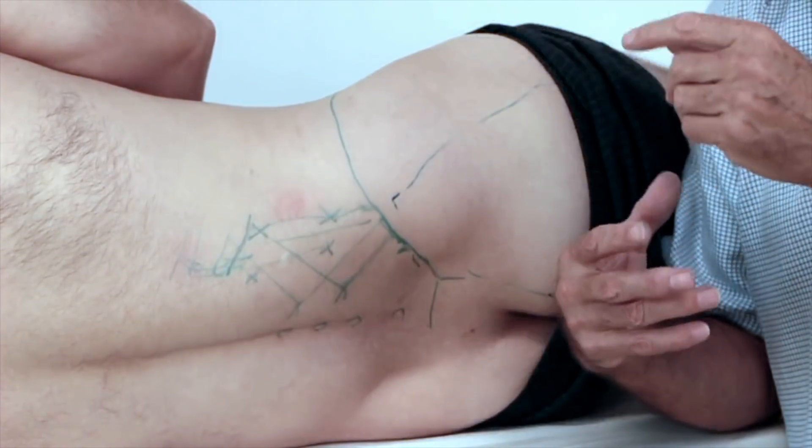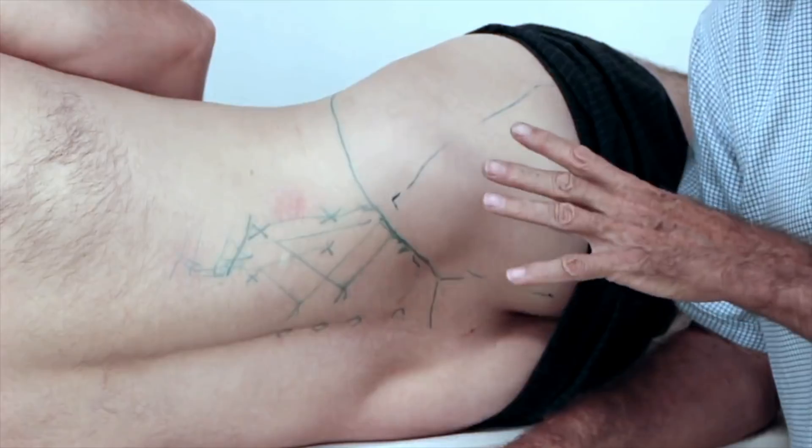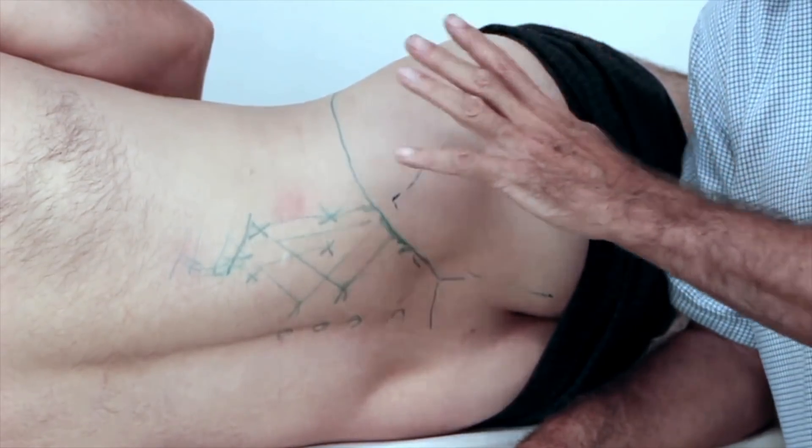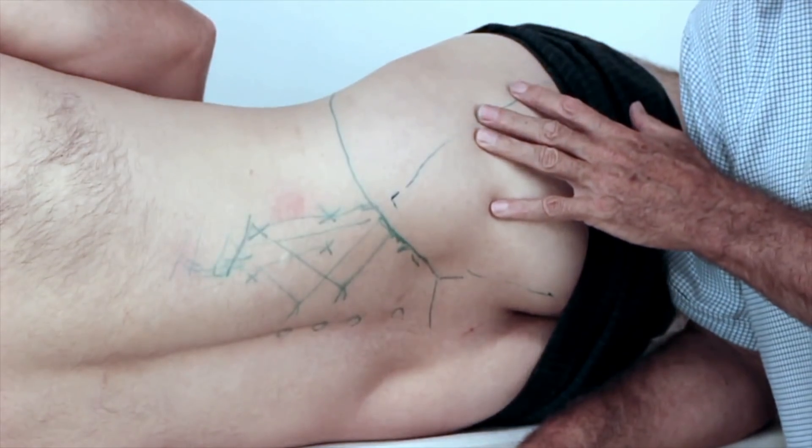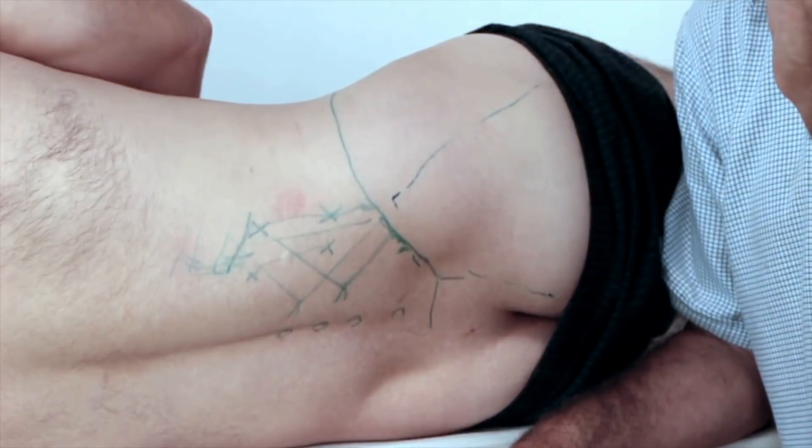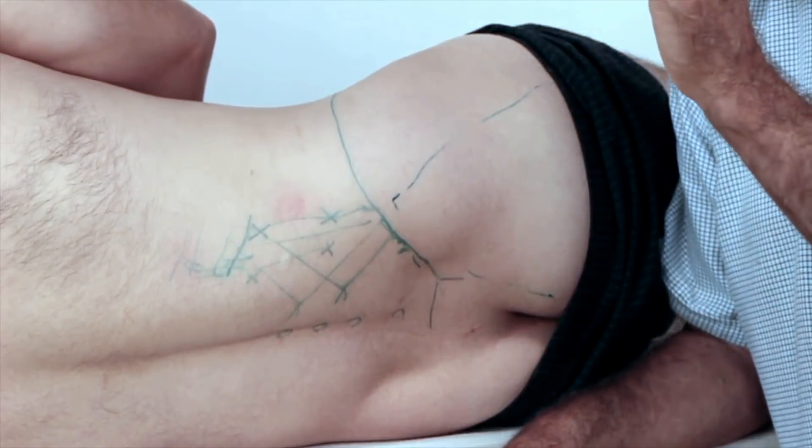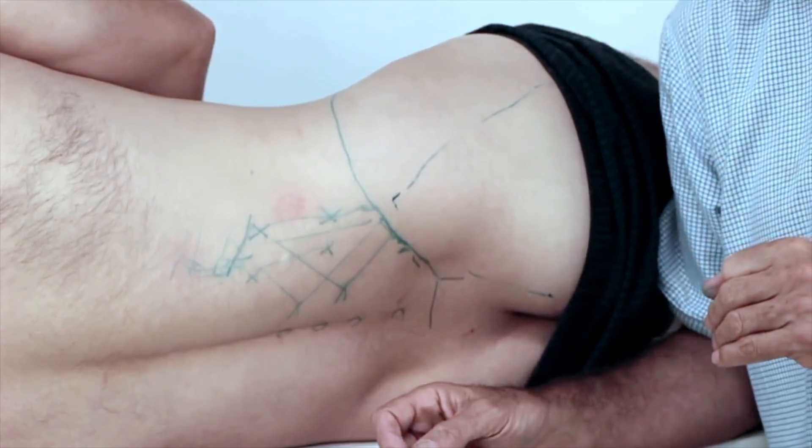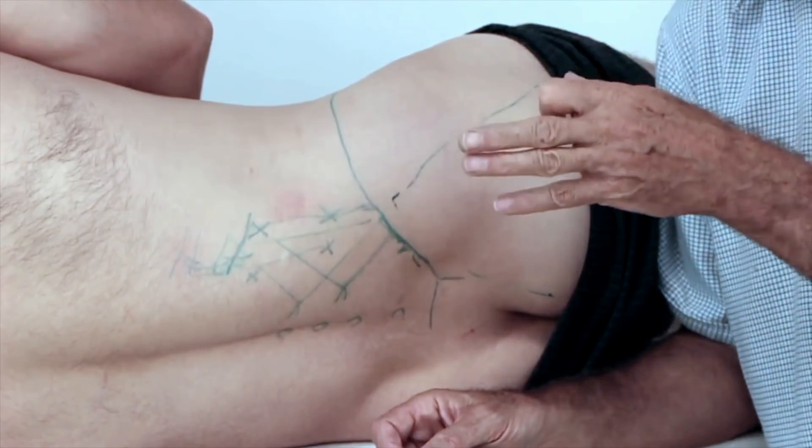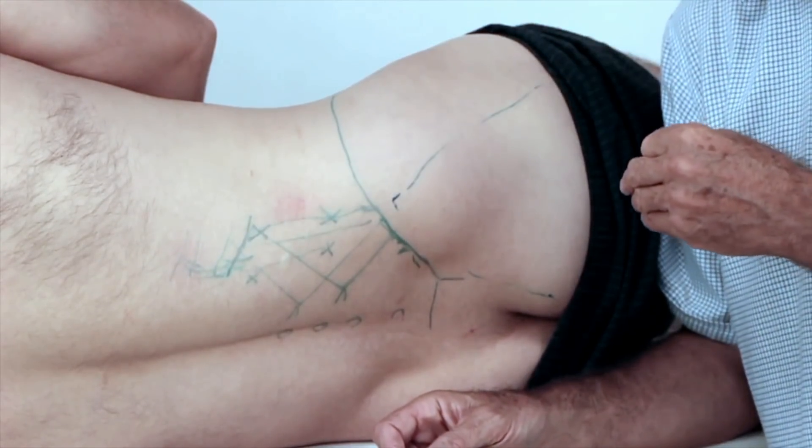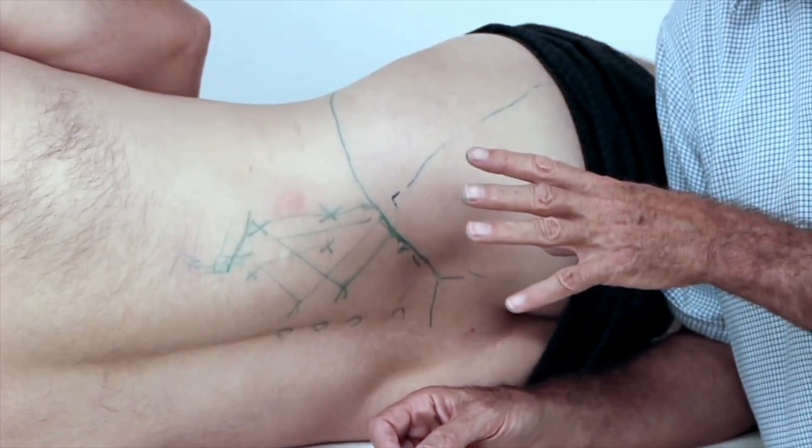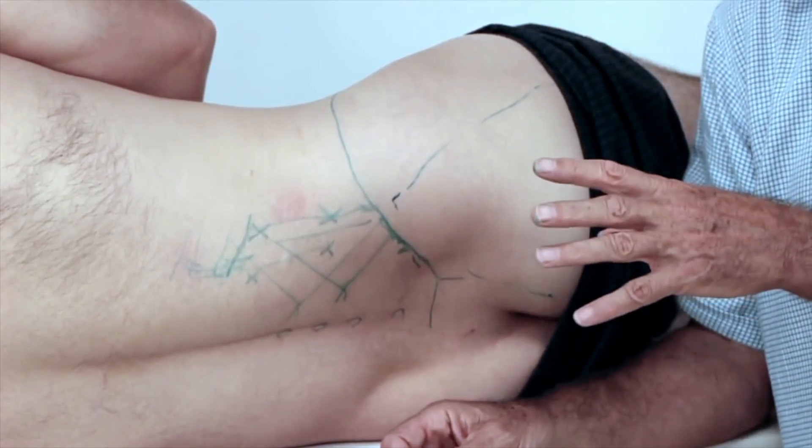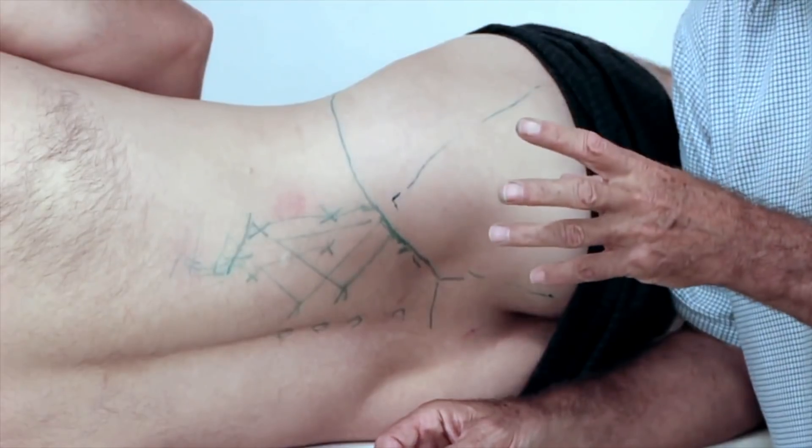When you look at trigger points in myofascial problems, the majority occur in posture muscles rather than power muscles. Glute max certainly gets triggers, and when they're there, they're very troublesome.